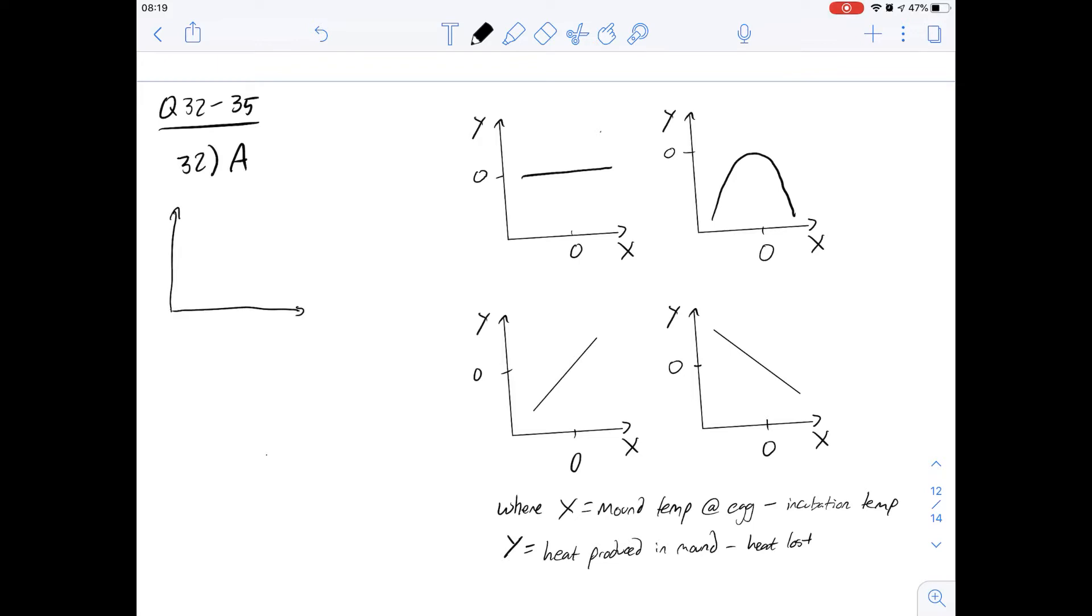So we're going to be looking at the Mallee fowl. Let's just simplify this into this graph here. So there's a sigmoidal curve that we have here, and I'm going to draw just this other axis in here too. So this on the side is going to be the oxygen consumption, which we're not that interested in for this question. This is going to be the metabolic rate, and this is going to be the time.